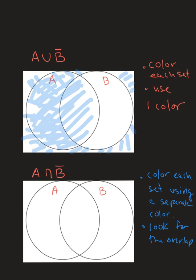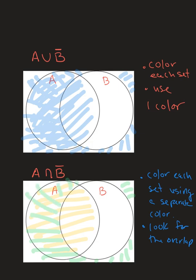Color each set, then look for the overlap. For set A, I'll use yellow and color the whole A circle. For B complement, I'll use green — and remember it's B complement, not B — so I trace around the circle and go outwards. Now step back and look at where both colors overlap. That portion with two colors is your visual representation of A intersect B complement.